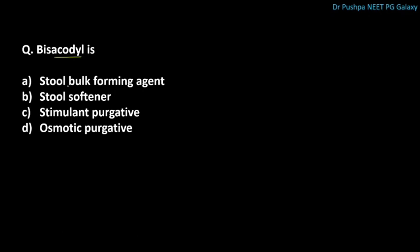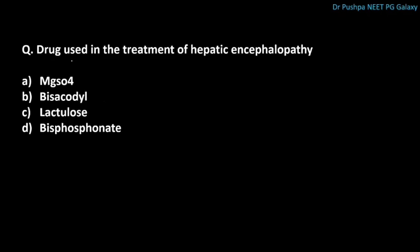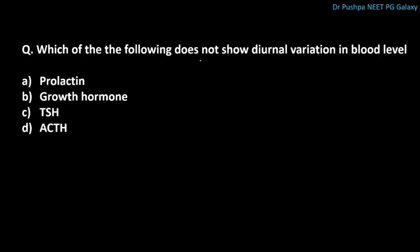Bisacodyl is a stimulant purgative. Which drug is used in the treatment of hepatic encephalopathy? The correct answer is lactulose. Which of the following does not show diurnal variation in blood level? The correct answer is TSH, thyroid stimulating hormone.